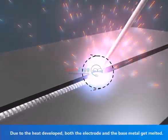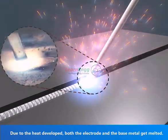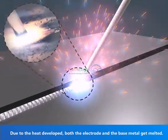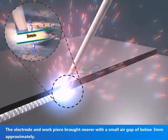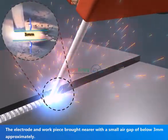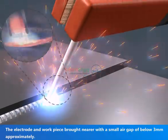Due to the heat developed, both the electrode and the base metal get melted. The electrode and work piece are brought nearer with a small air gap of below 3 mm approximately.